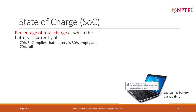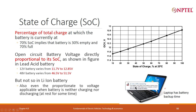State of charge is just a percentage of total charge available at any particular time — it will keep on varying. A state of charge of 70 percent means 70 percent of the battery is still there. Many of you may have noticed that sometimes if you have a laptop, a sign comes up saying 21 minutes remaining — that is 10 percent remaining. This is the state of charge. The laptop is estimating the state of charge and displaying it.